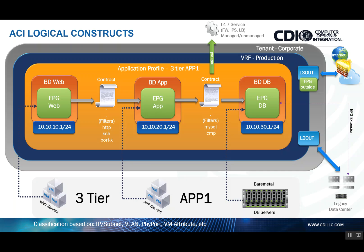In short, these are the more common logical constructs that you need to be aware of. There are other things that could be factored in, such as subjects and contracts, labels, and different configurations for layer four through seven insertion, but we can cover those in another video. I hope this was educational. If you are looking for more information or a proof of concept on Cisco ACI, please reach out to us at www.cdilc.com. Thank you.